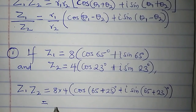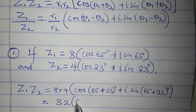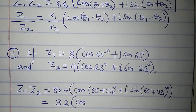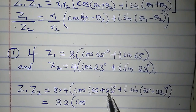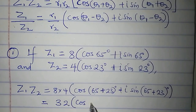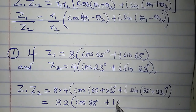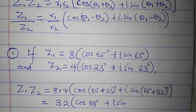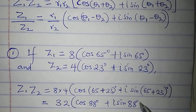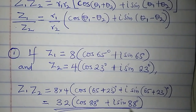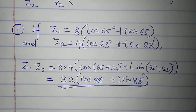8 times 4 is 32, and cosine of 65 plus 23 is 88 degrees, plus i sin 88 degrees. So this is the product of z1 and z2 in polar form: 32(cos 88° + i sin 88°).